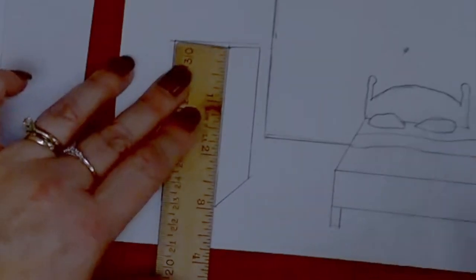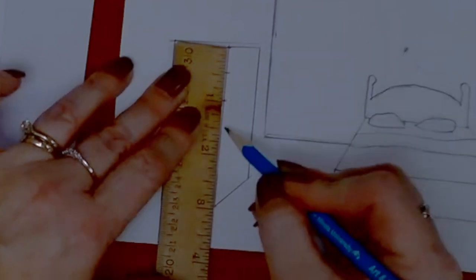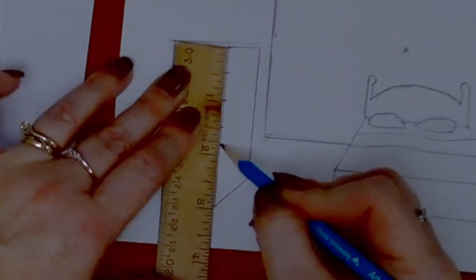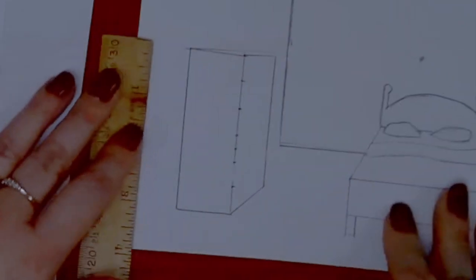Now I erase my extra orthogonal lines. I want to add some drawers to my dresser. First, I line my ruler up with the vertical edge and make a few tick marks for how wide I want my dresser. Then I connect each one of those tick marks to the vanishing point.